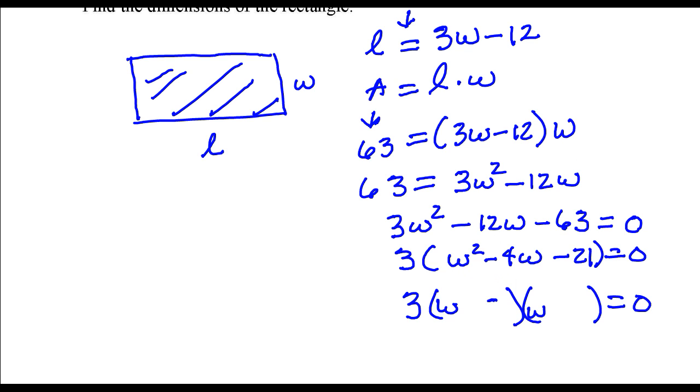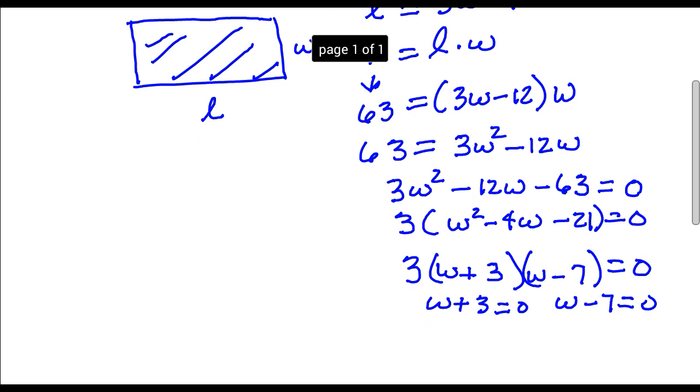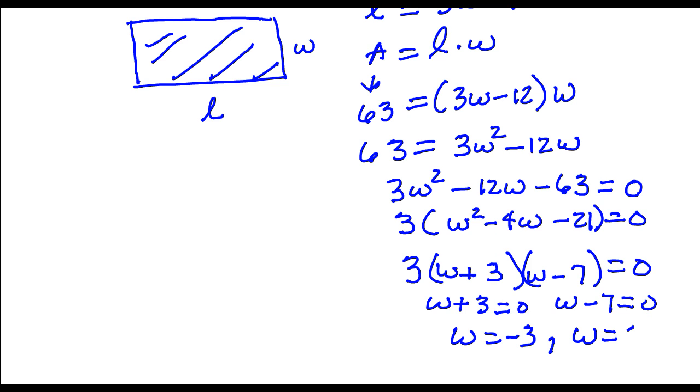So that would be a 3 and a 7. The 7 has to be minus, and the 3 has to be positive. So now I'm going to solve each of these factors for zero. So if I solve this equation, I get W is equal to negative 3, and here W is equal to 7.